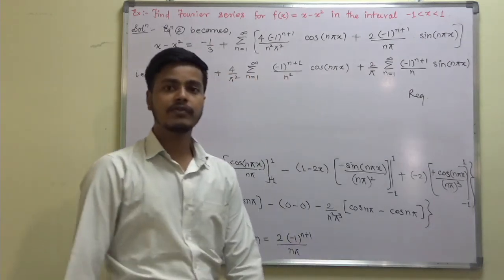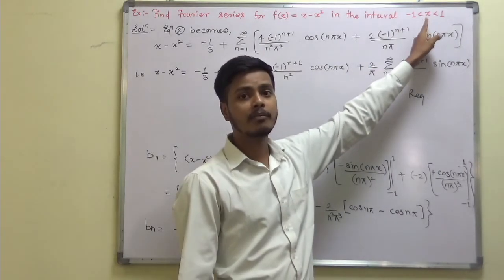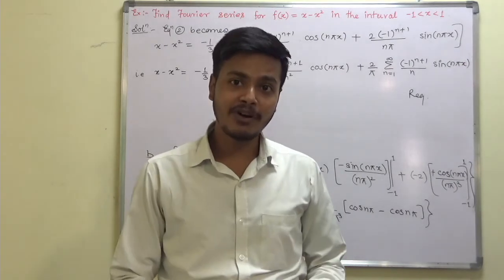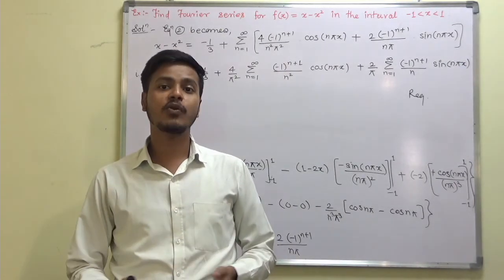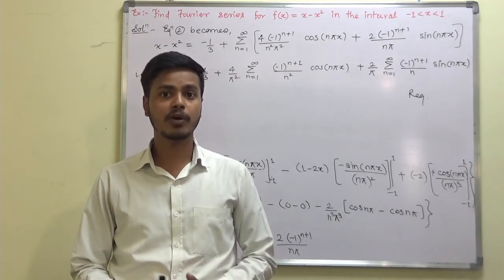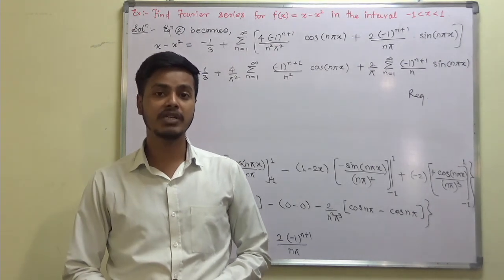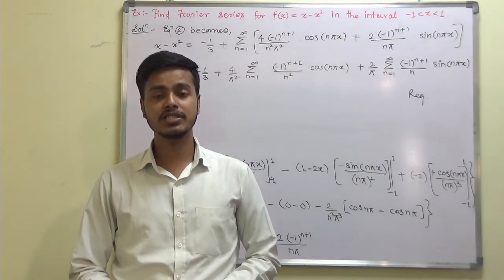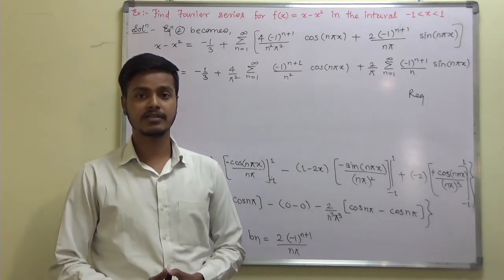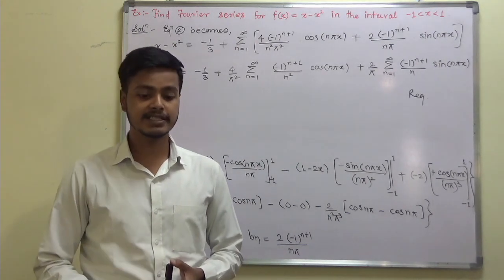This is the required Fourier series for f(x) = x − x² in the interval −1 to 1. So if the function is neither even nor odd, don't try to make it an even or odd function and don't find only a₀ and aₙ or only bₙ. Instead, find all three Fourier coefficients a₀, aₙ, and bₙ and substitute into the required Fourier series. Thank you for watching this learning video, and enjoy learning mathematics.